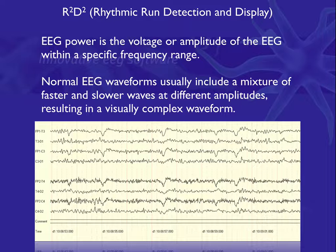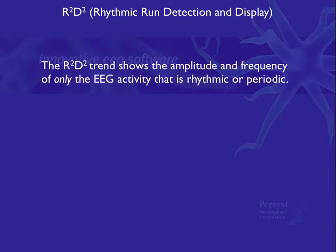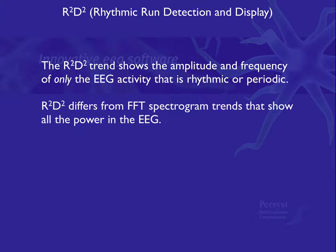The R2D2 trend shows the amplitude and frequency of the EEG, however it shows only the power of EEG activity that is rhythmic or periodic. R2D2 differs from FFT spectrogram trends that show all the power in the EEG. In other words, FFT spectrograms show the amplitude of the EEG at all frequencies in the clinical power spectrum, whether it is rhythmic or not.